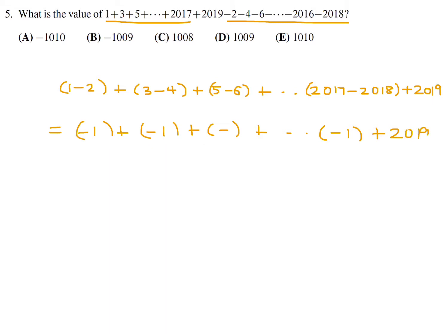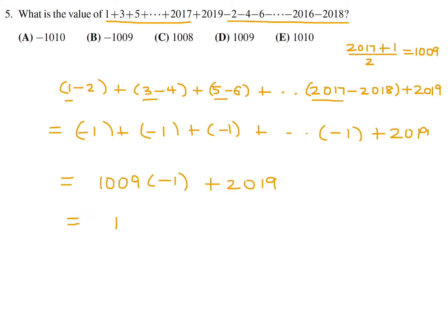We have a whole bunch of negative ones and then 2019 at the end. We need to figure out how many negative ones there are. It went from 1, 3, 5, all the way to 2017 — every odd number. To find how many, take 2017, add 1, and divide by 2, giving 1009. So it's 1009 times negative 1, plus 2019, which equals 1010. Number 5, the answer is E.